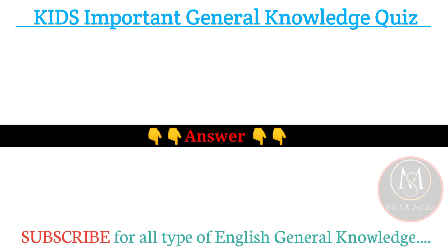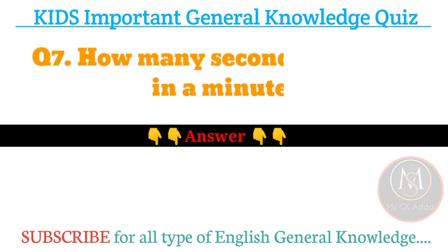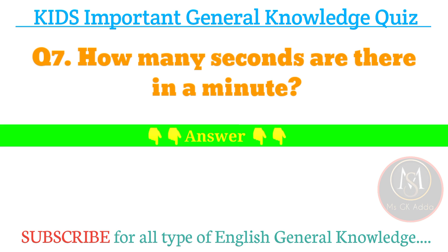Next, number seven: how many seconds are there in a minute? Answer: sixty seconds.